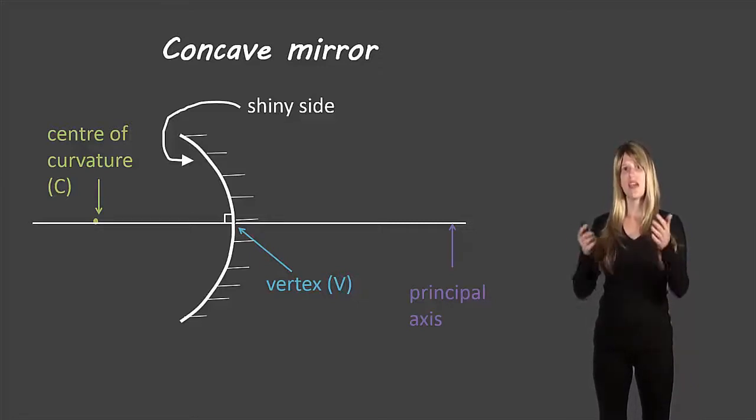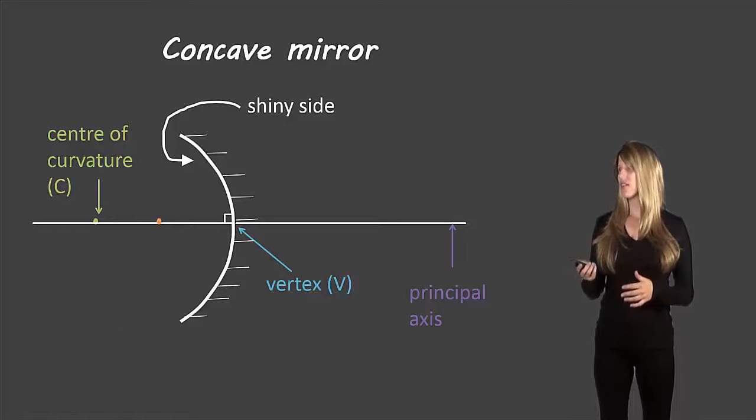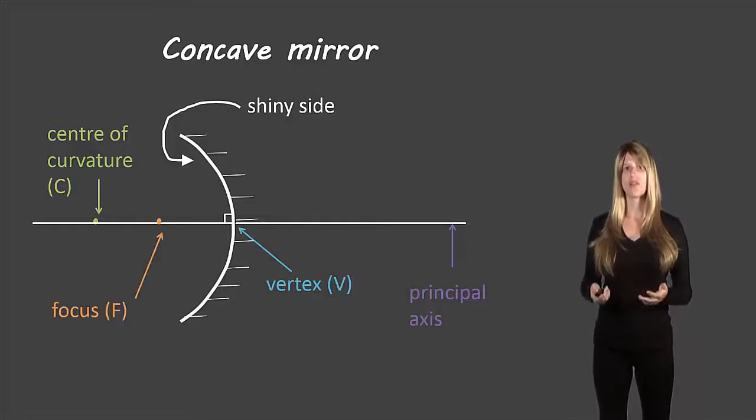Halfway between C and the vertex is the focus or F. So halfway between those two is the focus. And we'll see in a second what the focus actually means.